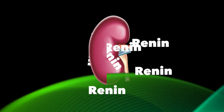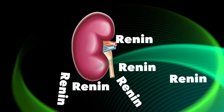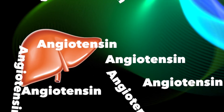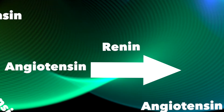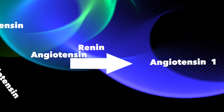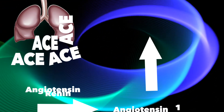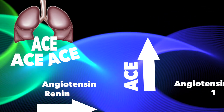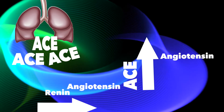When it comes to biochemistry, the kidney secretes renin and the liver secretes angiotensinogen. Renin converts angiotensinogen into angiotensin-1. The lungs secrete angiotensin-converting enzyme, or ACE, which converts angiotensin-1 to angiotensin-2.